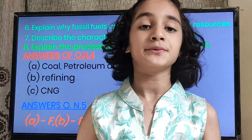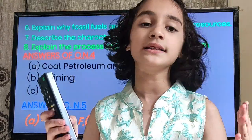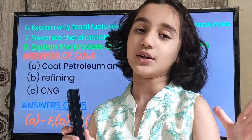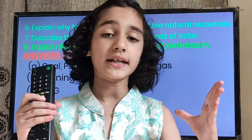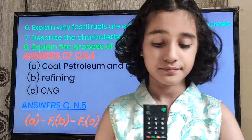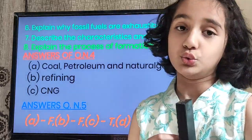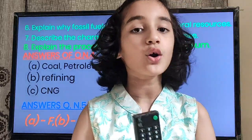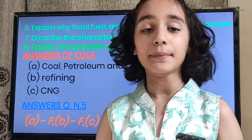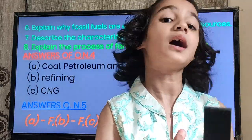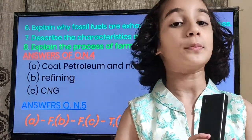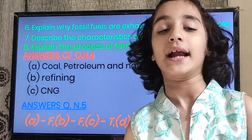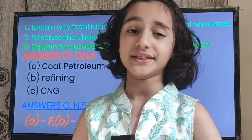Explain the process of formation of petroleum. Dead organisms which got buried in the sea millions of years ago got covered with layers of sand and clay. Due to lack of air, high temperature and high pressure, these dead organisms got transformed into petroleum and natural gas.